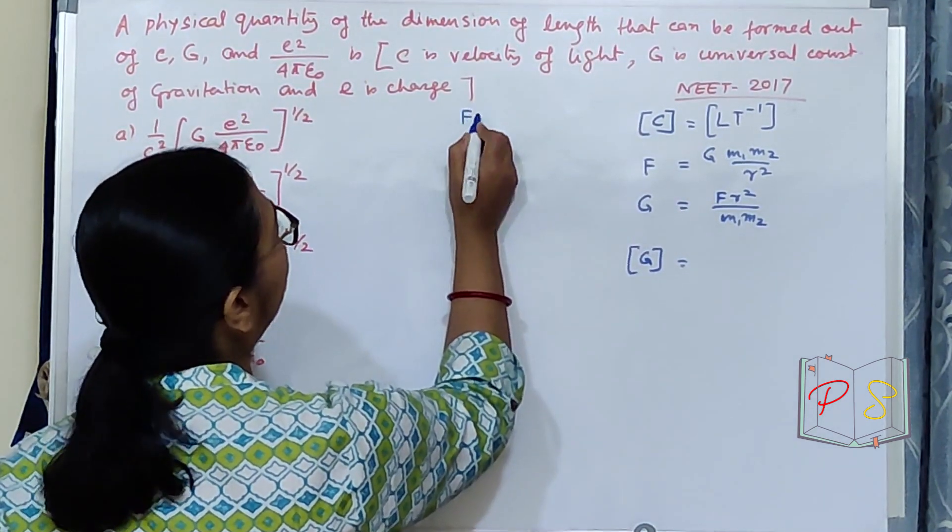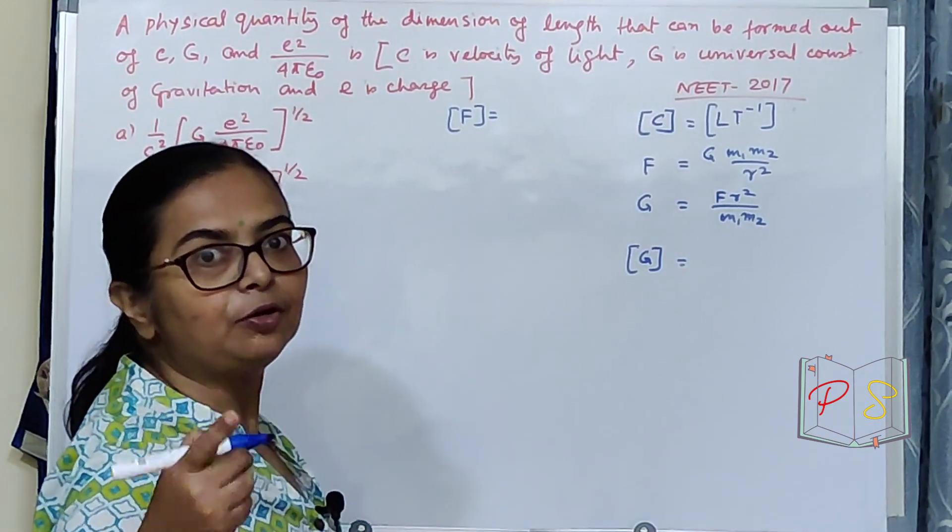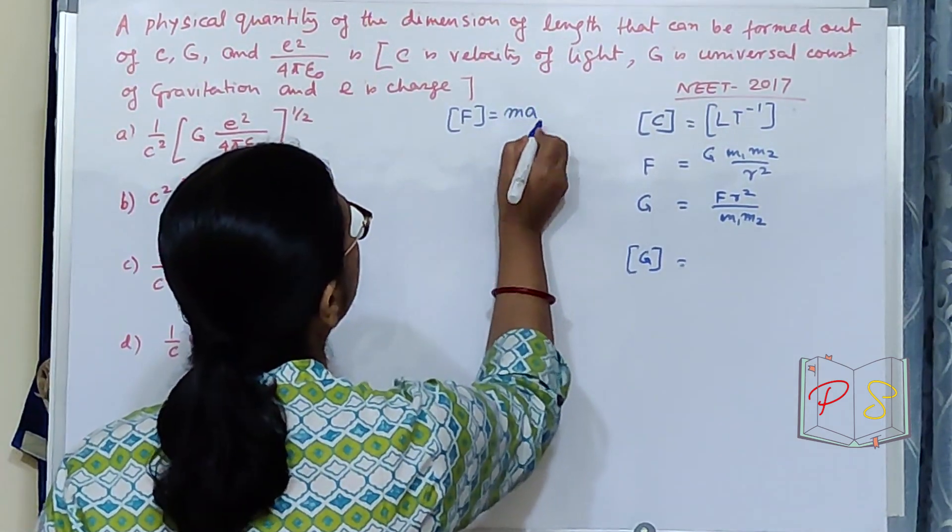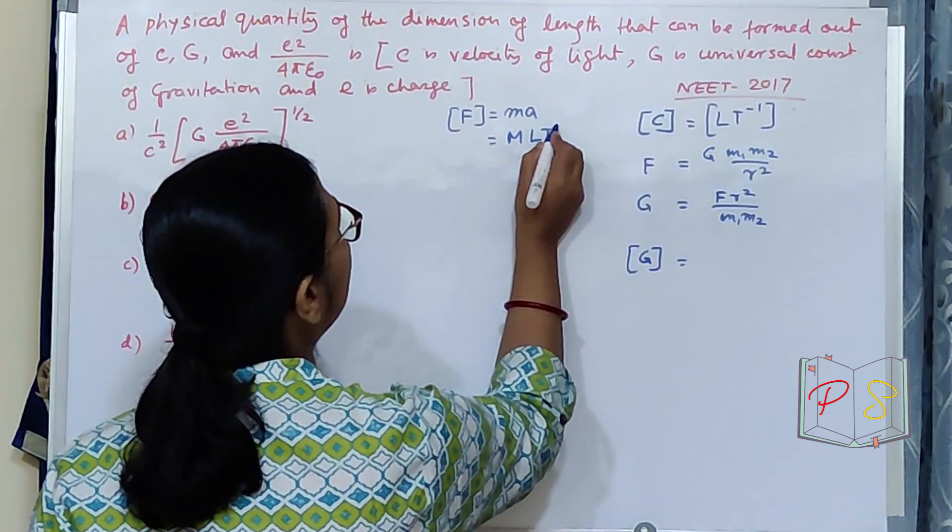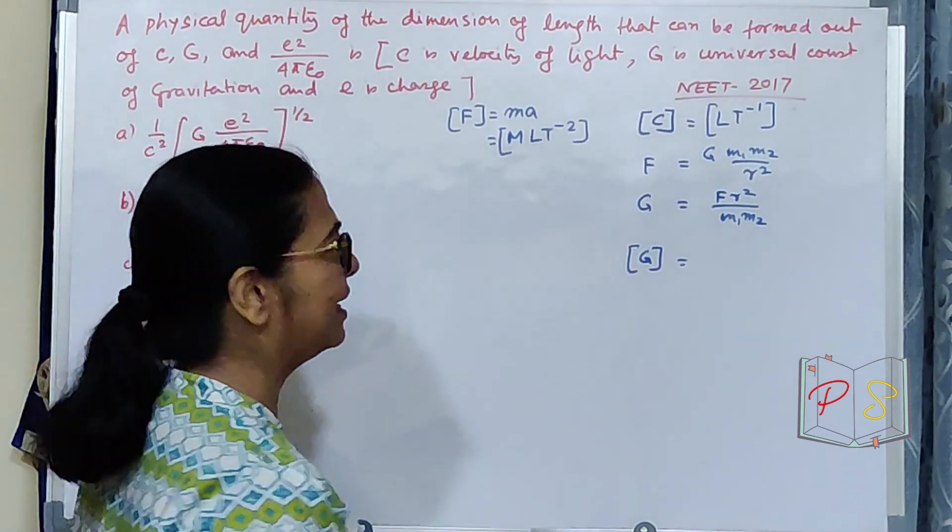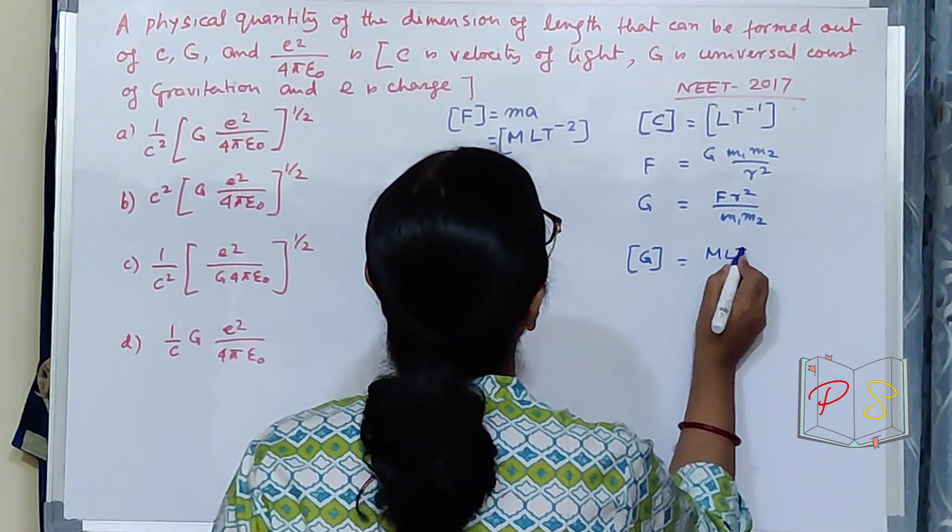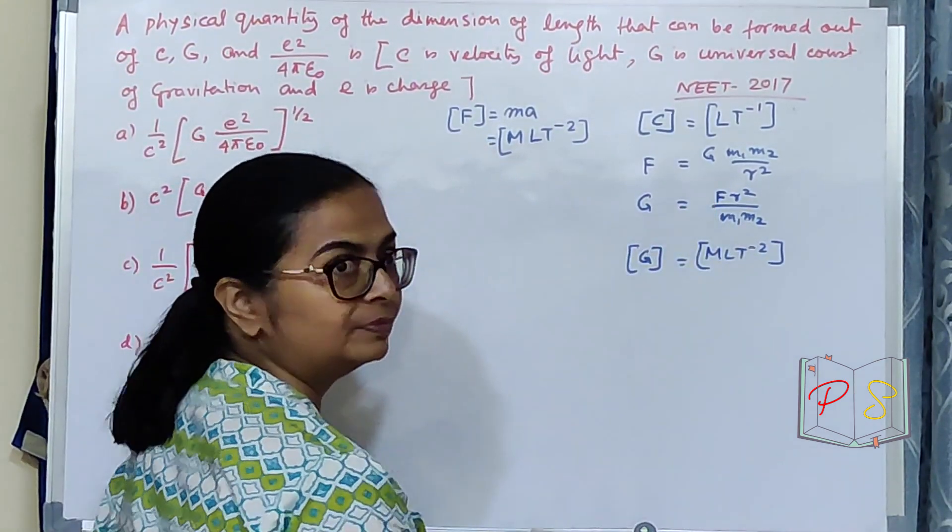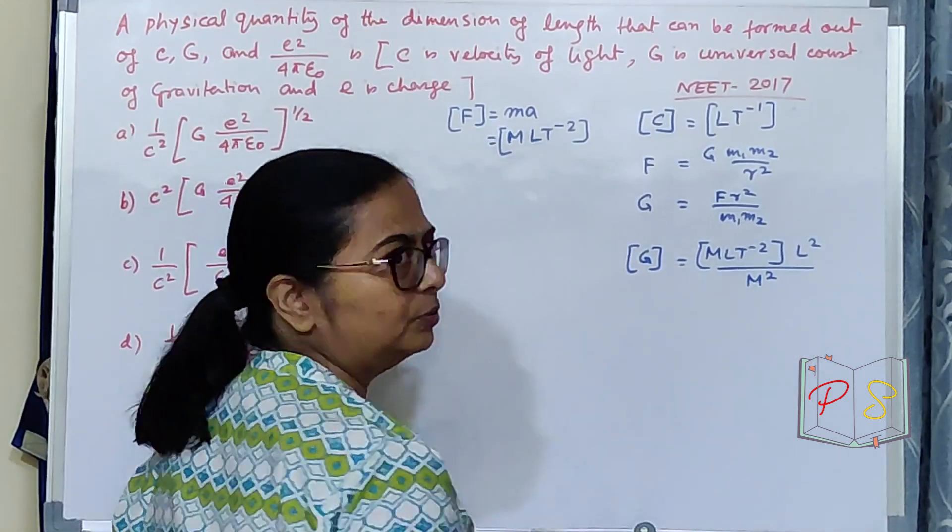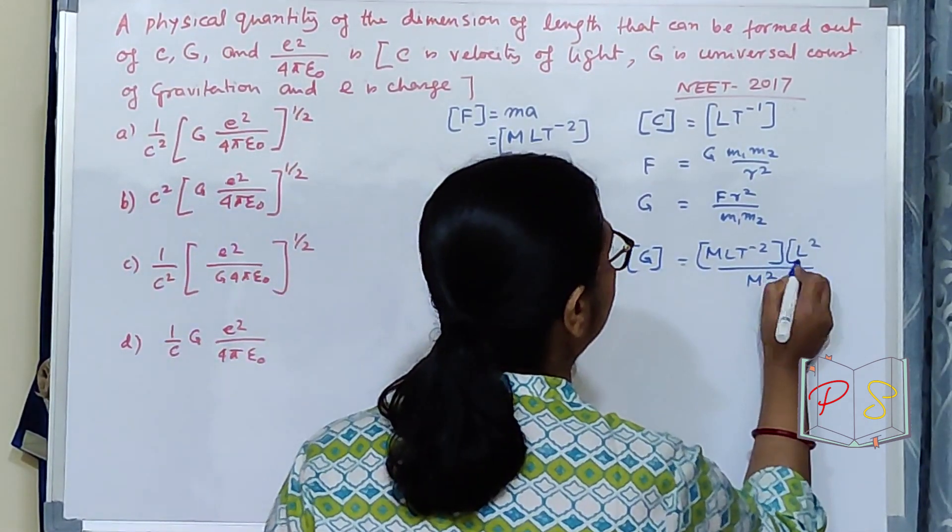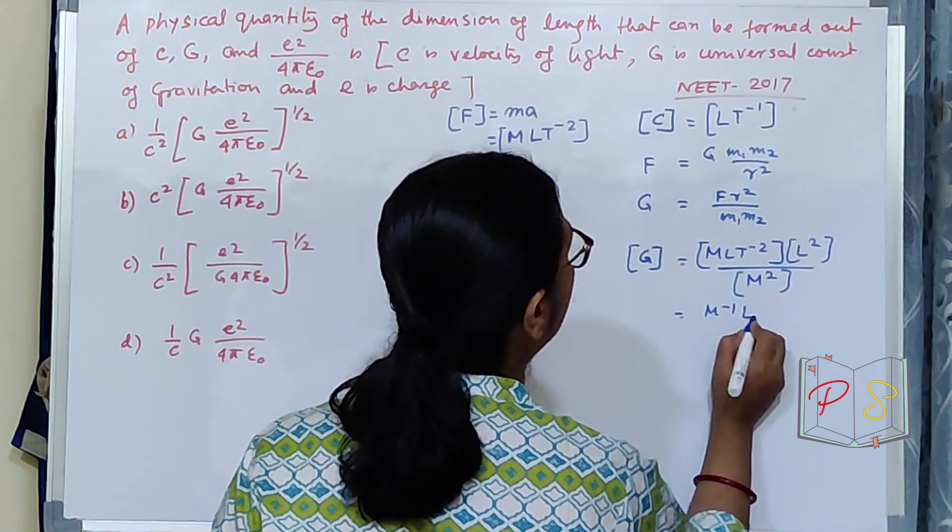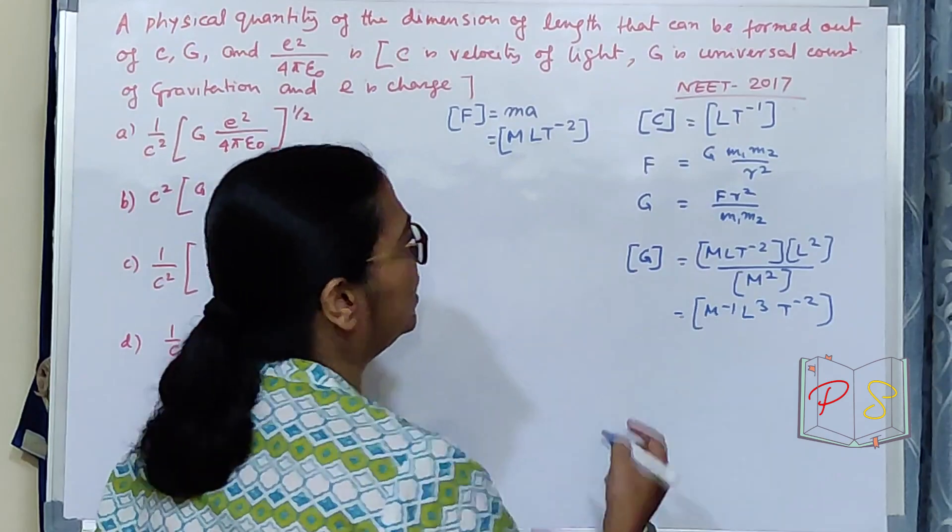What is the dimension of force? I need to write somewhere force, dimension of force. Force is M into A, mass into acceleration. That is also from Newton's second law of motion. Mass into acceleration. For acceleration the dimension is T minus 2. M L T minus 2 is the dimension of force. So, I will have M L T minus 2 for F. For R square I have L square. For M1, M2 I have M2. So, what I will have? M minus 1 L 3 T minus 2 as dimension of G.